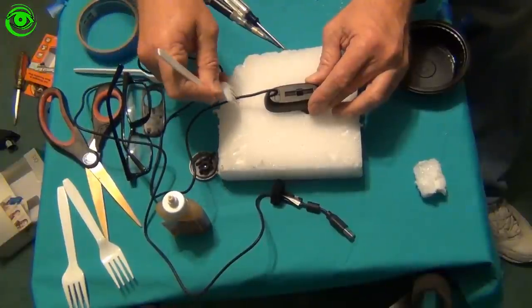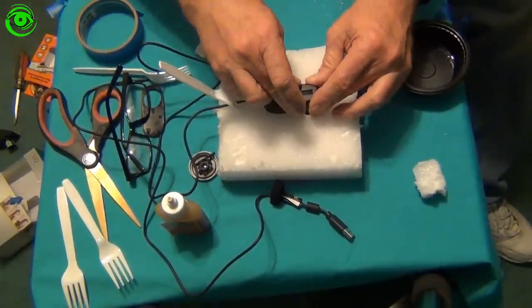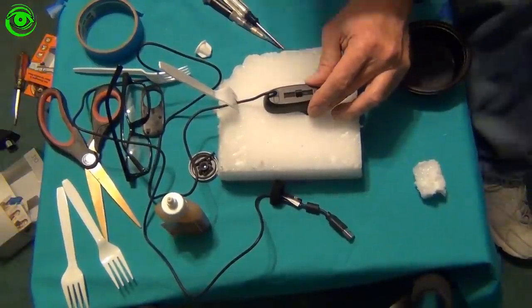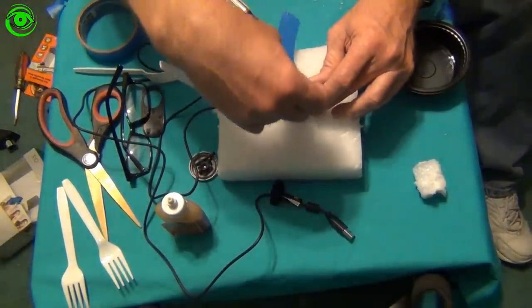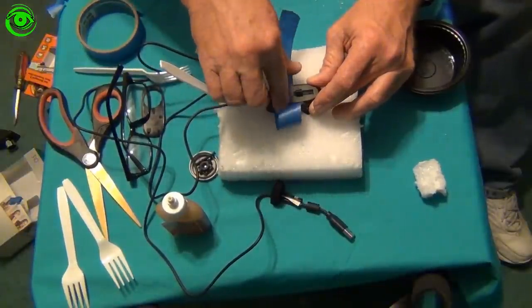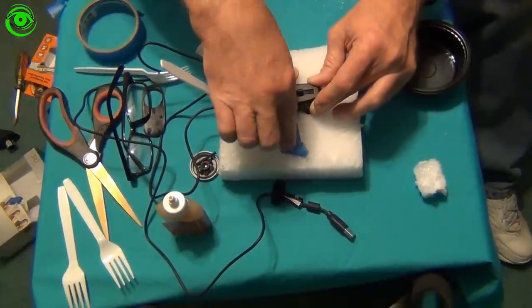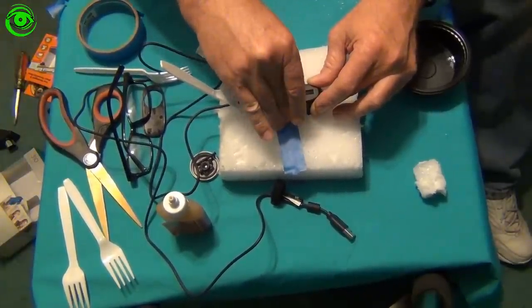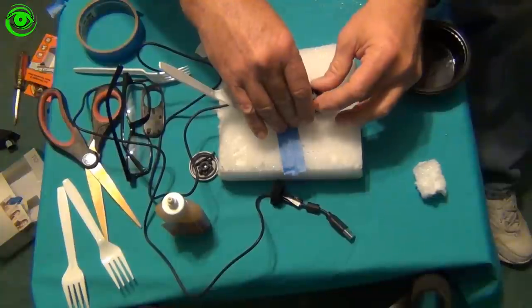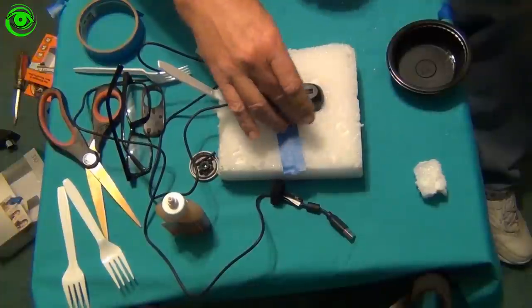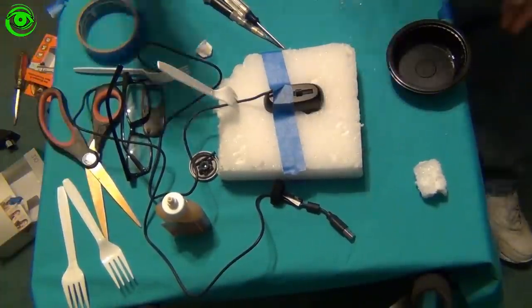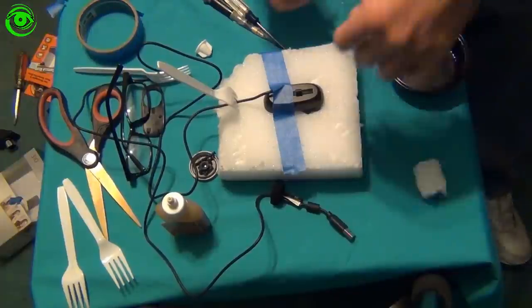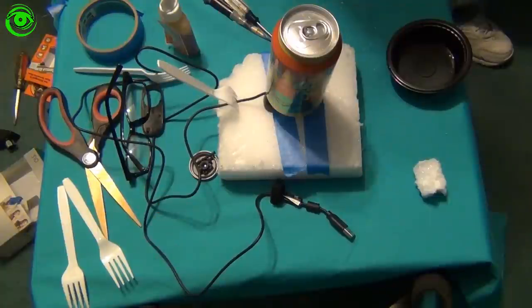These forks hold that down right there. I've also got some tape here to maybe hold it down a little better. That actually worked pretty good just putting a little bit of that tape on there. Put another piece right here along the top. I put a can of coke on top of there just to keep a little bit of more pressure on it while it dries.